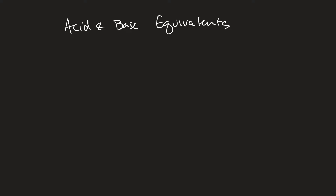In this video we're going to talk about acid-base equivalents. With many types of chemistry, when we're dealing with ions, sometimes the most important thing about ions is the charge and not necessarily what the ion is. In a previous video we talked about one equivalent, or one EQ, which is equal to one mole of a particularly charged ion.